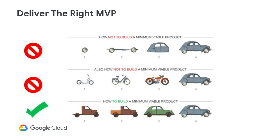The first example should be avoided, which is building incrementally. After each release there's no business value, since we only get from point A to B until the very end in release four. The second example is better — it achieves the goal of getting from A to B in each release with a working device, but it forces the team to rework the product in every release, leading to a lot of waste and throwaway effort.